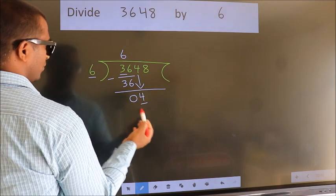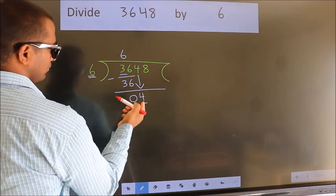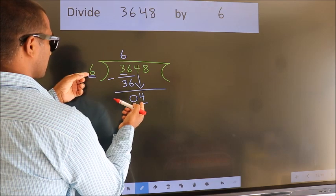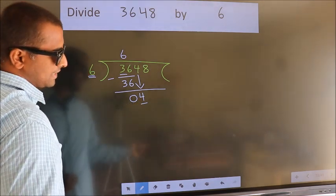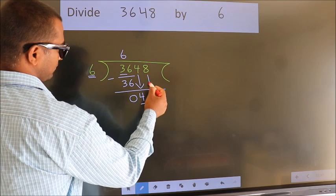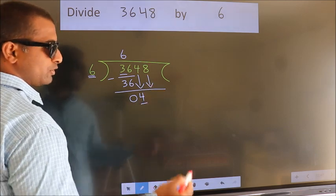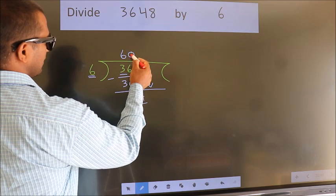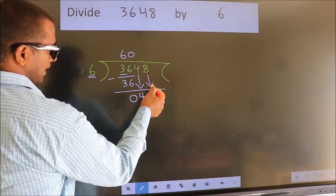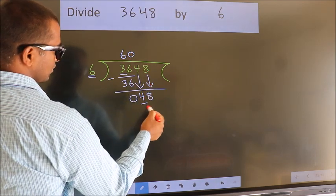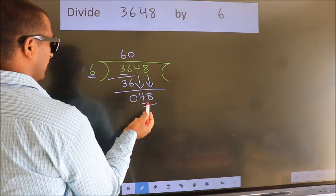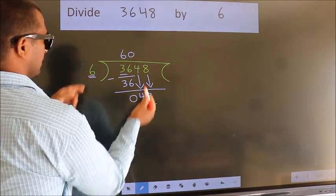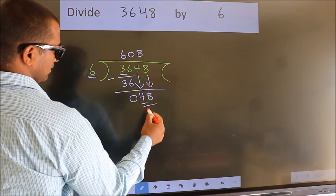Here we have 4, here 6. 4 is smaller than 6, so we should bring down the second number. And the rule to bring down the second number is put 0 here. Then only we can bring down this number. So, 48. When do we get 48? In the 6 table. 6 times 8 is 48.